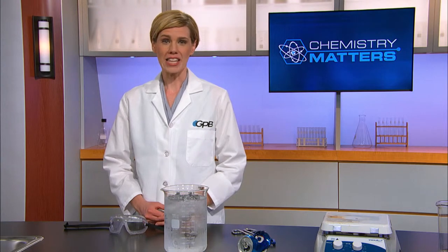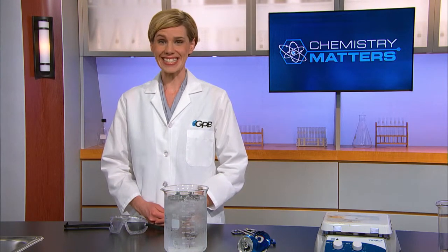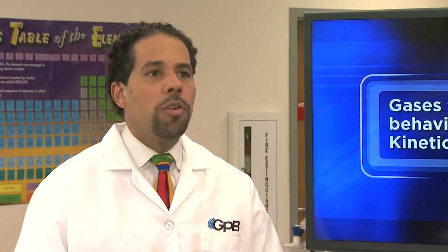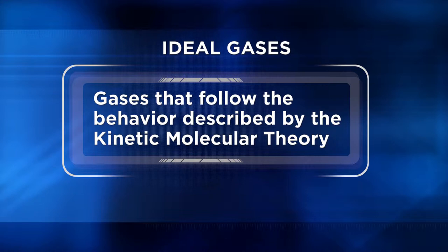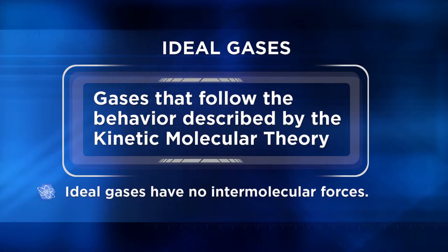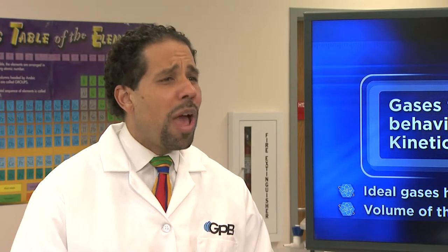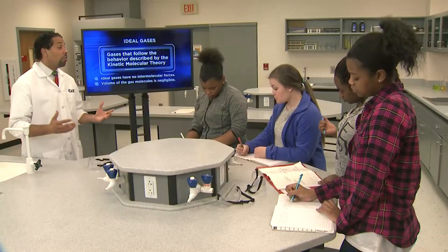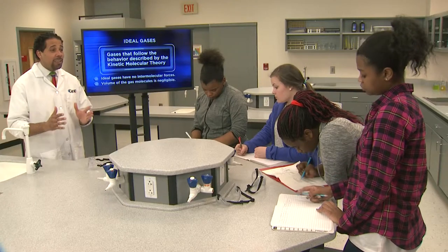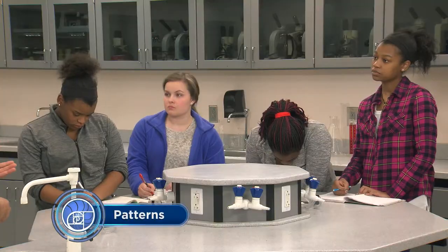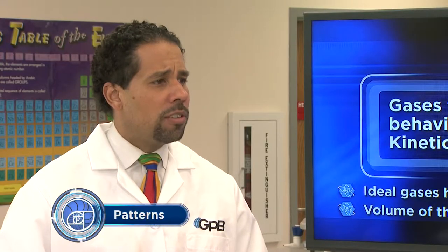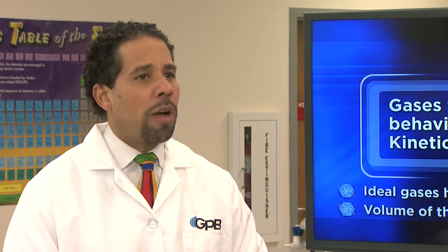Now that you know the theory behind the behavior of gases, let's go back to our classroom to see gases in action. Ideal gases are gases that follow the behavior described by the kinetic molecular theory. The two most important assumptions about an ideal gas are that there are no intermolecular forces between gas molecules and the volume of the gas molecules themselves are so small as to be negligible compared to the volume between the molecules. Many gases approximate the behavior of ideal gases, which greatly simplifies the calculations we can use to describe these gases.